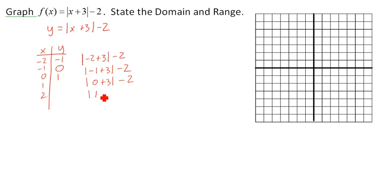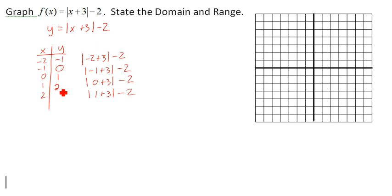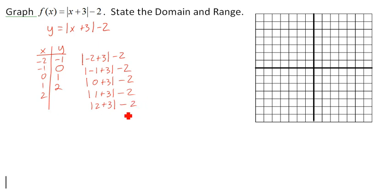Absolute value of 1 plus 3, minus 2. So 1 plus 3 is 4, and 4 minus 2 is 2. Then the last one: 2 plus 3 is 5, and minus 2 is 3.